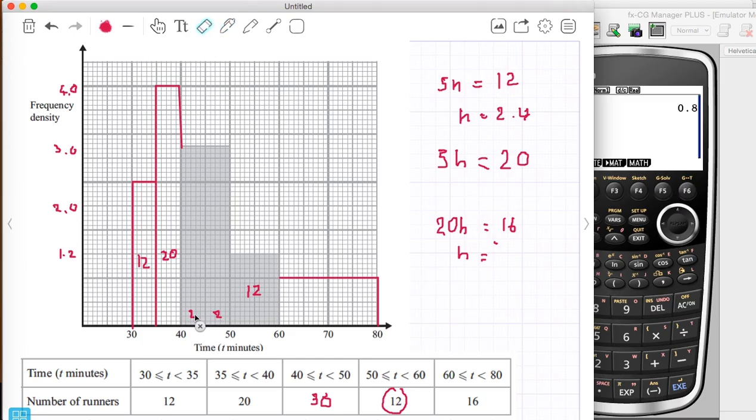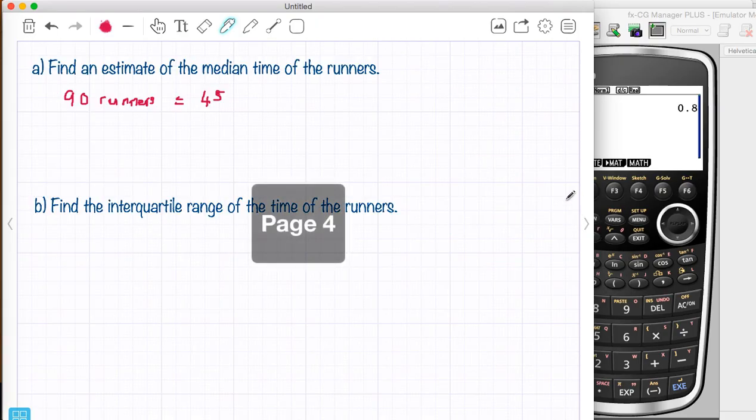So that would give me 12 and 20 and then another 30 would give me 62 people and I'm looking for the 45th. So it's in here somewhere. So 12 and 20 make 32 when my median is 45. So I need to add another 13 people on to get to my median in that bar.